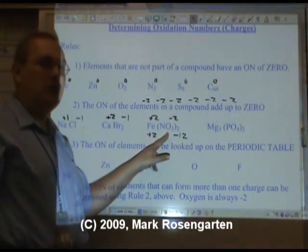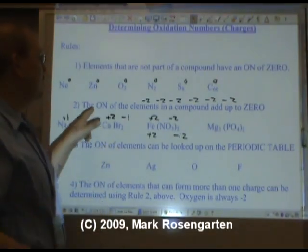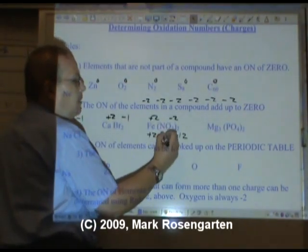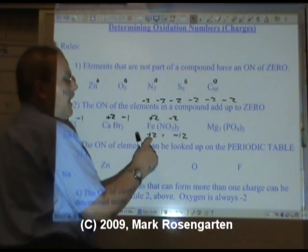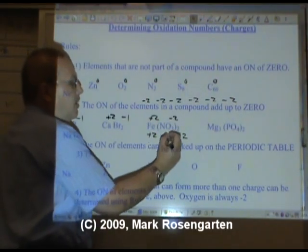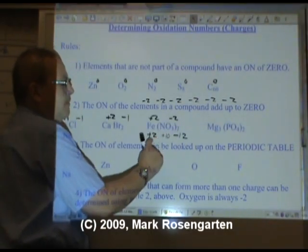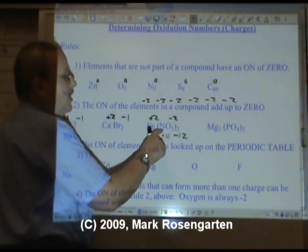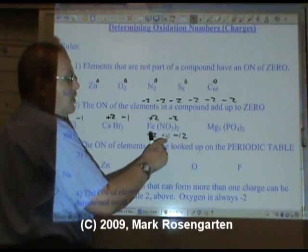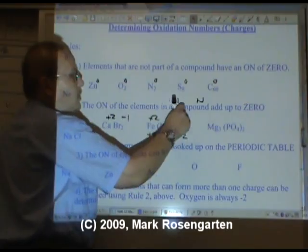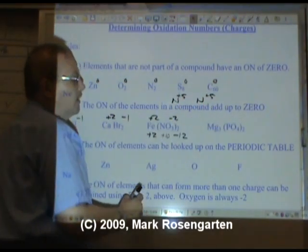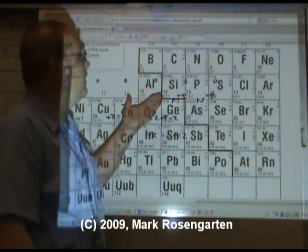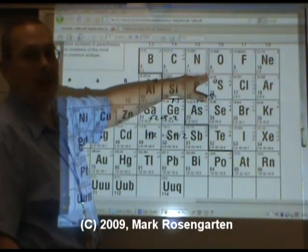So oxygen's total contribution to the charge in this compound is minus twelve. Now the charge of the elements in the compound have to add up to zero. So whatever nitrogen is, we know it has to be positive because the negative is much bigger than the positive so far. Plus what is going to make this cancel out? Plus ten. Plus ten and plus two adds up to plus twelve, that cancels out the minus twelve. There are two nitrogens in this compound. If two nitrogens are plus ten, each nitrogen is plus five. And then we verify it, nitrogen can in fact have a plus five oxidation number.